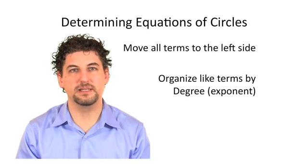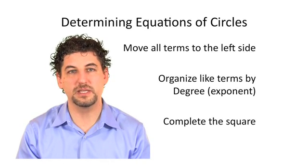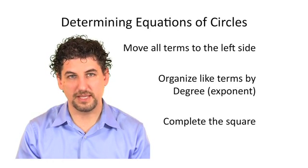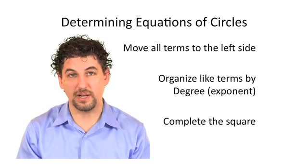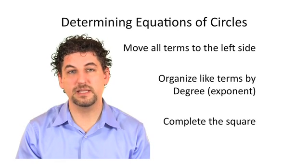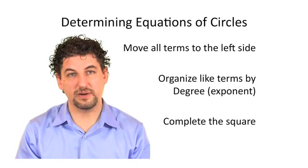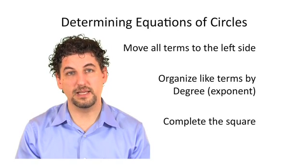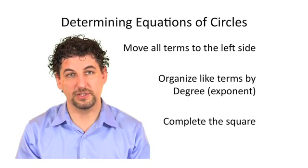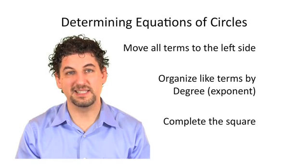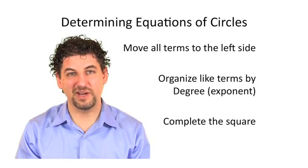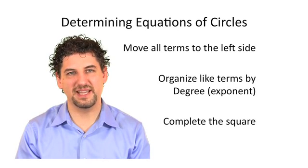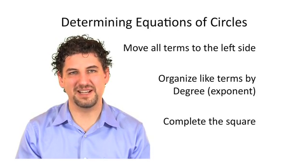Once you have that, you're going to probably need to complete the square. A lot of the times these problems don't include very clear numbers that go with the X's or go with the Y's. So you're going to need to complete the square in order to figure out the equation. Then you should end up with something in the general form of a circle, and you'll even be able to determine the center point for the circle and the radius once you have it in a nice neat form.